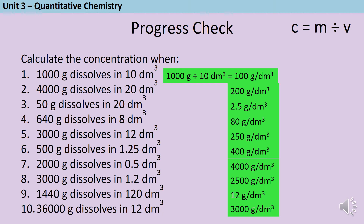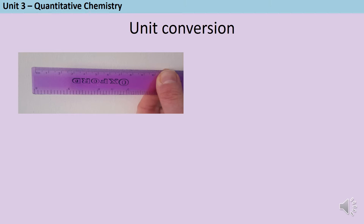If you'd like to do some more practice, there's a link to the worksheet in the description below. It's possible, or even likely, that you haven't encountered decimetres cubed before, but now you need to be able to use them and convert back and forth between decimetres cubed and centimetres cubed, and sometimes even metres cubed as well. This is particularly important if you're taking GCSE chemistry or triple science and you're going to go on and learn about titration.